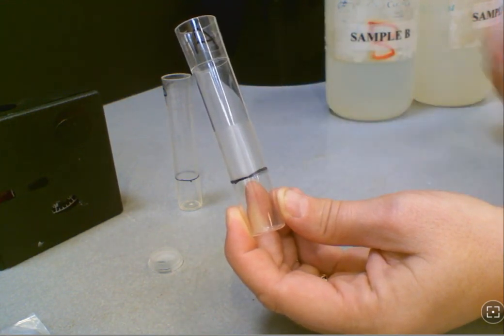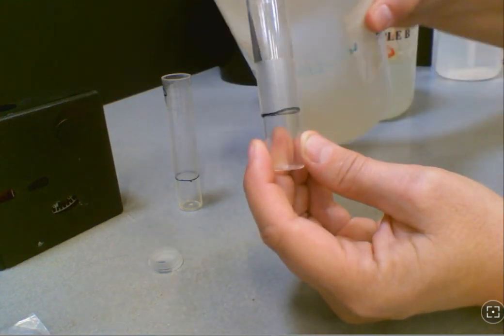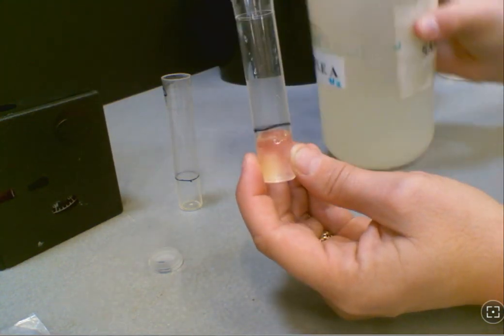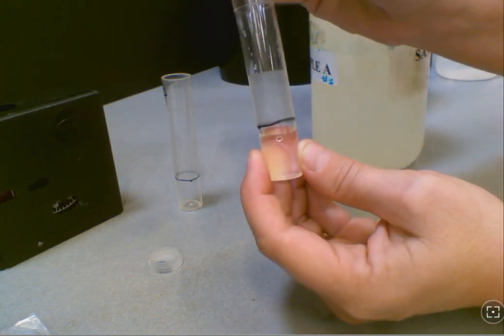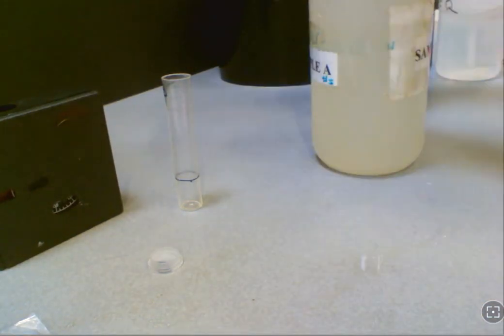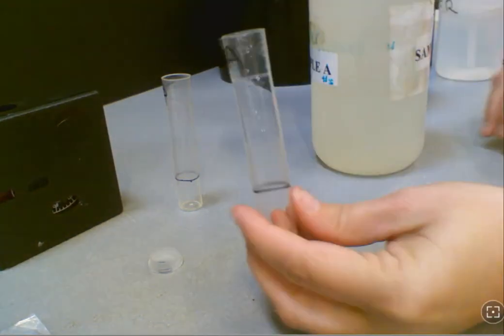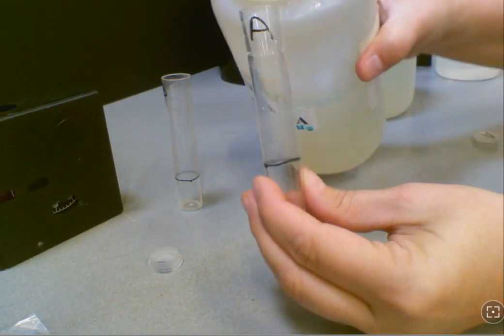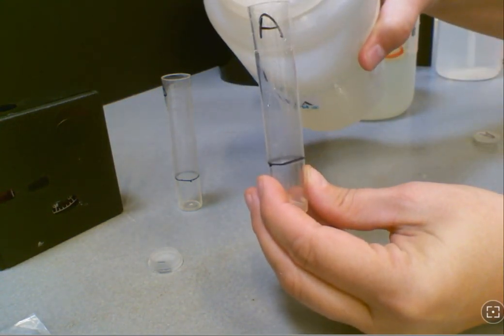Now the first step is to rinse your test tube in sample water, so you're simply just going to put some sample water in it and then pour it back out to get any remaining chemicals or samples out. Once you're finished with that, go ahead and fill up your sample A and your sample B to the line as indicated.